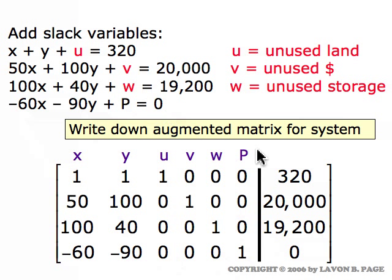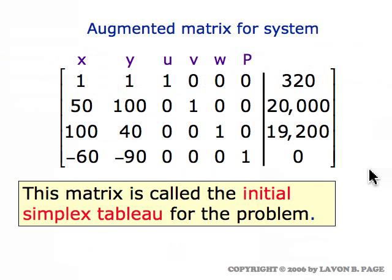What I have written down is nothing more or less than the augmented matrix for this system of equations, exactly as we treated it in Chapter 1. When we're applying the simplex method, we refer to that augmented matrix as the initial simplex tableau — tableau, of course, being the French word for table. This is the starting point for a simplex method solution to the linear programming problem.